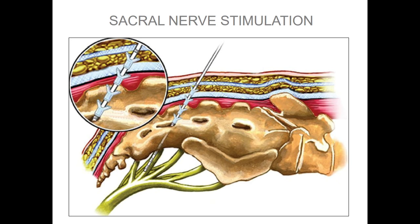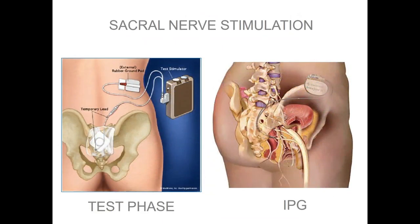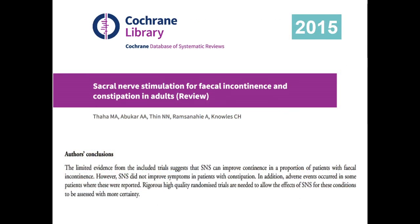Sacral nerve stimulation is the implant of a tined lead in the third sacral foramen to stimulate the pudendal nerve — a two-stage procedure. The test phase: implant the tined lead, wait one month, and if you have a good response, go to the second phase with the IPG — the impulse generator — for definitive stimulation. In 2015, a Cochrane published recommendations for SNS for incontinence and constipation. For fecal incontinence, SNS is really effective, but for constipation the two randomized trials did not prove any advantage. In the US, FDA approved SNS only for fecal incontinence; for constipation it is recommended only if you are part of a clinical trial.